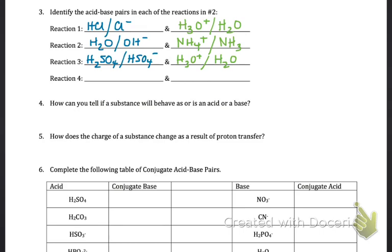Reaction four: HBr gives away a hydrogen ion to become Br⁻. The other pair is HCO₃⁻ and CO₃²⁻. When I say acid-base pair, I mean an individual species — one reactant behaved as an acid and became a conjugate base; the other reactant was a base and became a conjugate acid. Drawing arrows is really useful to see what substance is donating hydrogen ions and what is receiving them, and you can verify that conjugate acid-base pairs differ by exactly one hydrogen ion.